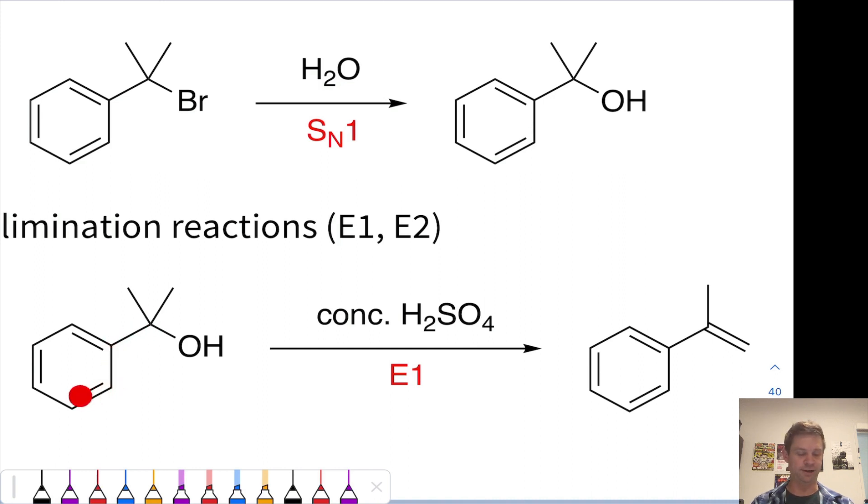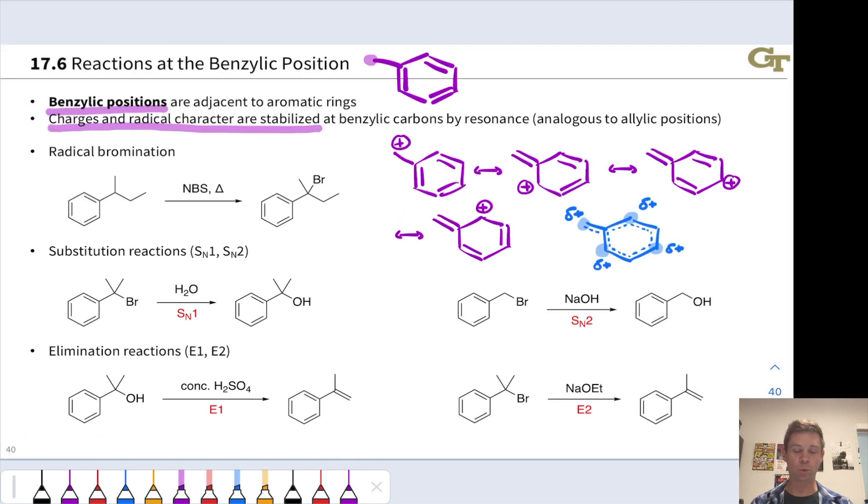That's a benzylic position, right? So this benzylic cation is relatively stable, and a base, probably water, comes along and deprotonates at a beta carbon to give us this alkenyl benzene, or more colloquially known as a styrene product. So that's E1 elimination.